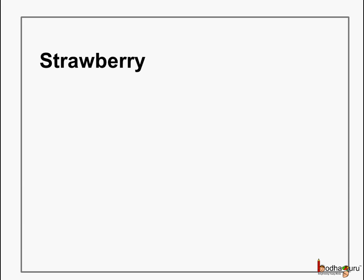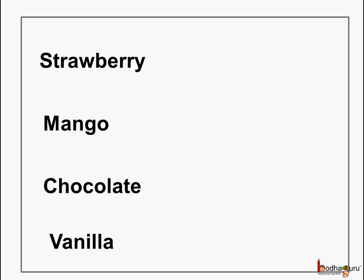Let us see what Aman did. Aman wrote down all the flavors of ice cream which they needed: strawberry, mango, chocolate, and vanilla. He wrote down the names of ice creams required. Next, he wanted to write how many strawberry, mango, chocolate, and vanilla ice creams were required.